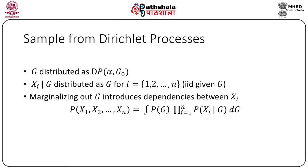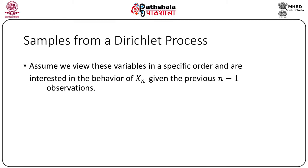If G is DP(A, G_0), then X_i given G is distributed as G, for i from 1 to N — they are i.i.d. given G. Marginalizing out G introduces dependencies between the X_i. To take samples from the Dirichlet process, we consider the variables in order and look at the behavior of X_N given the previous N minus 1 observations. X_N given X_1, ..., X_{N-1} equals X_i with probability 1/(N - 1 + alpha), or a new draw from G_0 with probability alpha/(N - 1 + alpha).